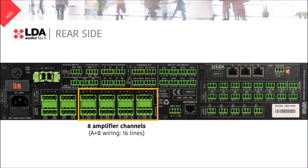If we take the outputs before the amplification process, we will have the pre-amp outputs. For example, these audio line level outputs are useful in case you want to add external recorders or auto-amplified speakers.